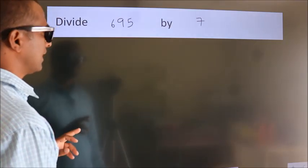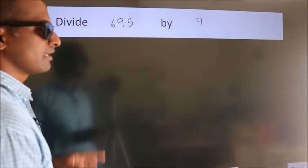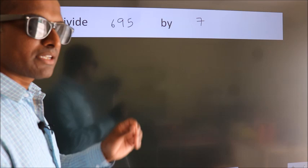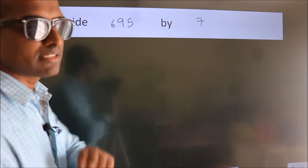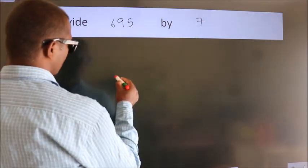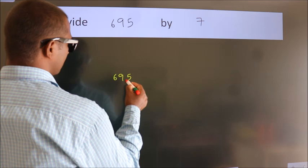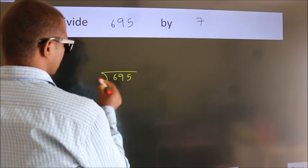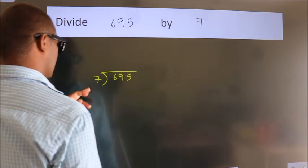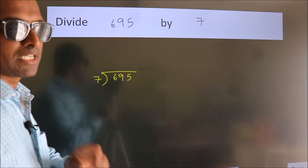Divide 695 by 7. To do this division, we should frame it in this way: 695 here, 7 here. This is your step 1.